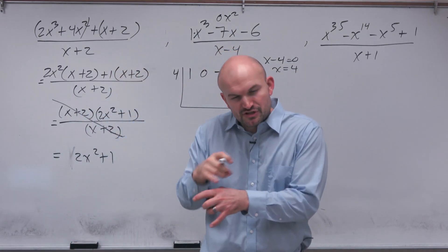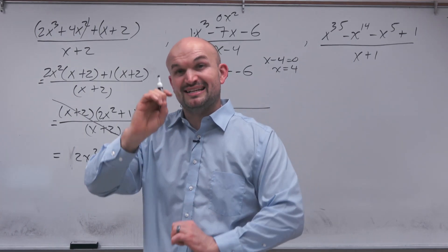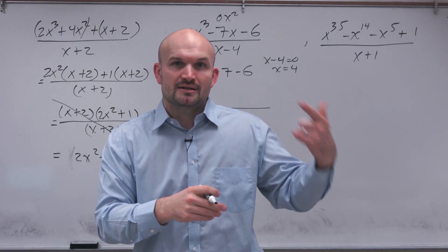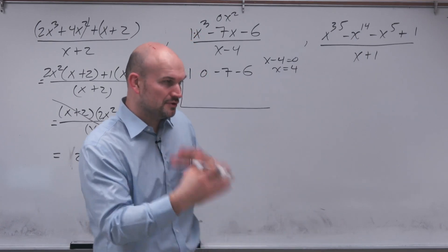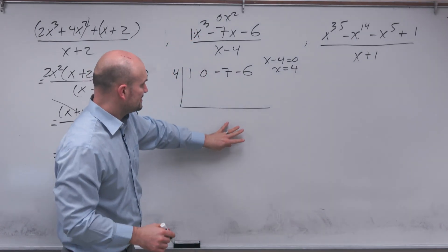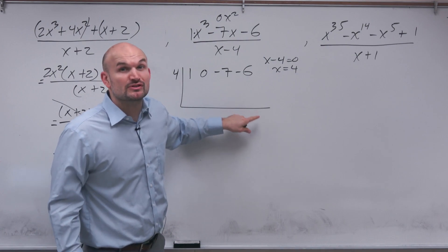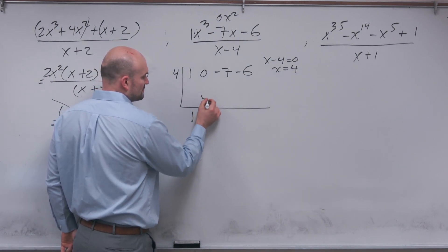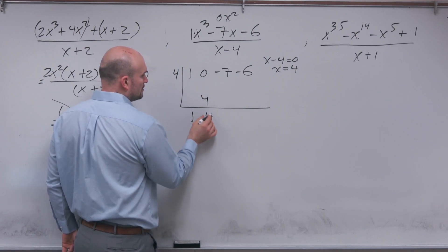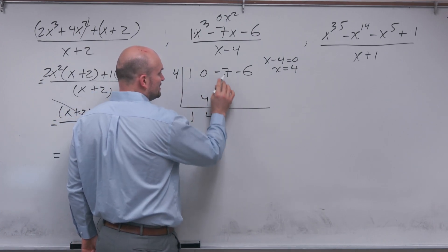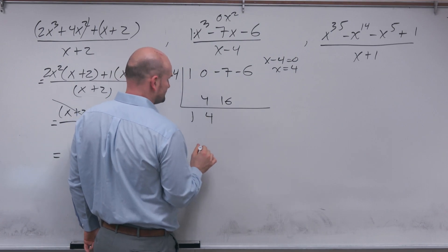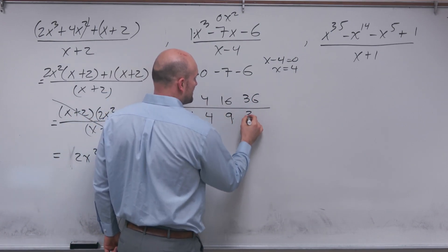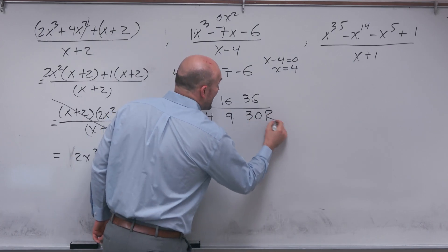Synthetic division is a little bit more preferred because we're going to be doing addition and multiplication to divide compared to long division, which would actually be dividing and subtraction. My last term is going to tell me what the remainder is when I'm doing division. So I bring down the 1, 1 times 4 is 4, 0 plus 4 is 4, 4 times 4 is 16, negative 7 plus 16 is going to be a positive 9, 9 times 4 is 36, and that gives me a positive 30. So that is my remainder.